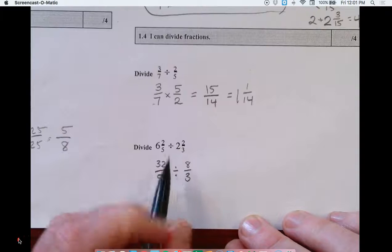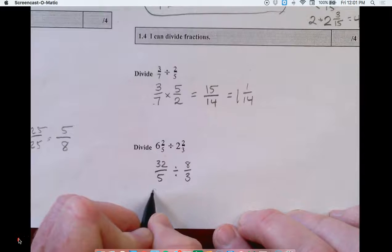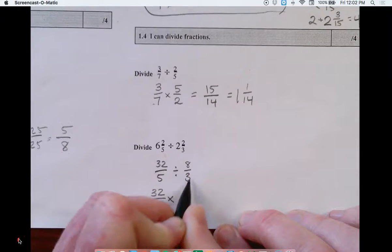Now, I've turned this into a problem that looks like this, so now I do the step of multiplying by a reciprocal. So this is thirty-two-fifths multiply by the reciprocal, so we're going to flip.